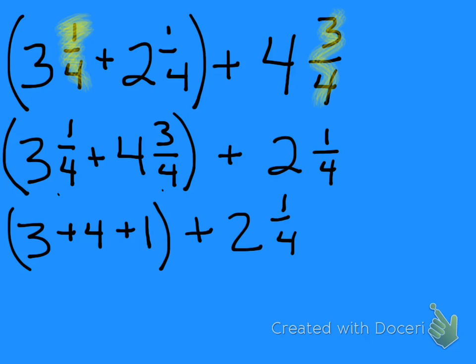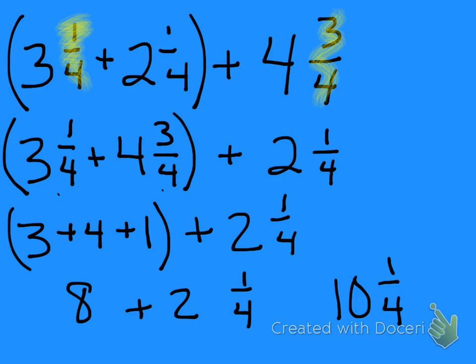So I have that this equals 8 plus 2 and 1/4, and then you can finish by adding the whole numbers, which would be 10 and 1/4 as your final answer. I am trying to get the kids to look to see if they need to simplify, and this problem does not need to be simplified.